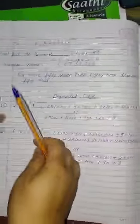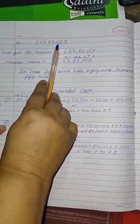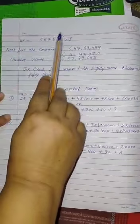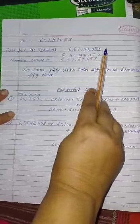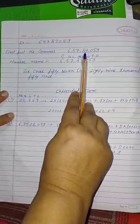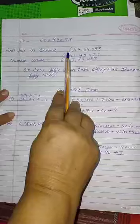Another example is 657,89053. First, we put the कॉमा. कॉमा हमेशा राइट हैंड से रखेंगे. First, three digits के बाद. First, second, third. After two digits, one, two. Next two digits, one, two.